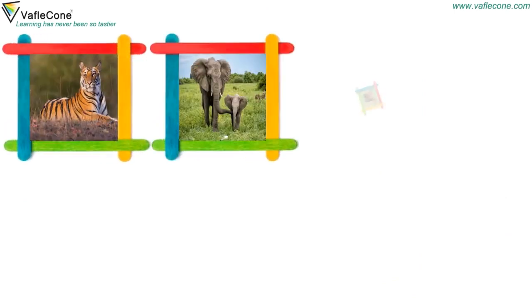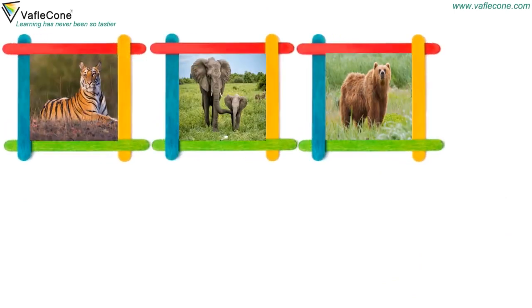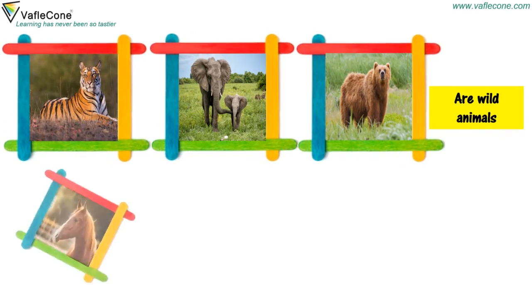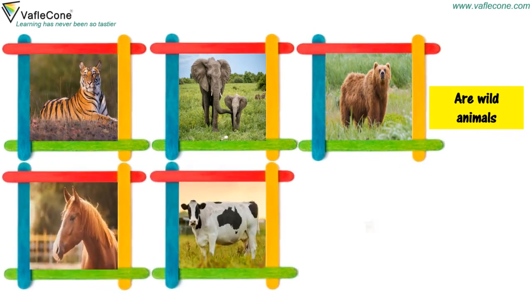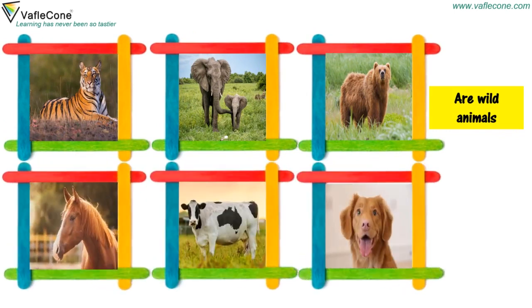Tiger, Elephant, and Bear are wild terrestrial animals. Horse, Cow, and Dogs are domestic terrestrial animals.